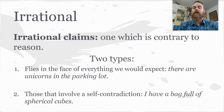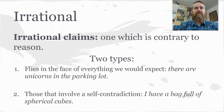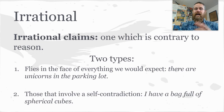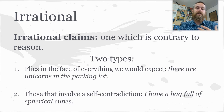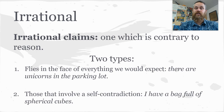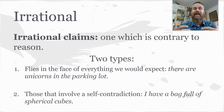An irrational claim is one that is contrary to reason. There are two basic types. The first is a claim that flies in the face of all of our experiences — for example, 'there are unicorns in the parking lot.' We've never seen anyone in recorded history actually see a unicorn, so it's irrational, and for good reason we can reject it. The second type involves a self-contradiction — for example, if I told you I had a bag full of spherical cubes. That's impossible because the definitions of sphere and cube are inherently contradictory concepts.